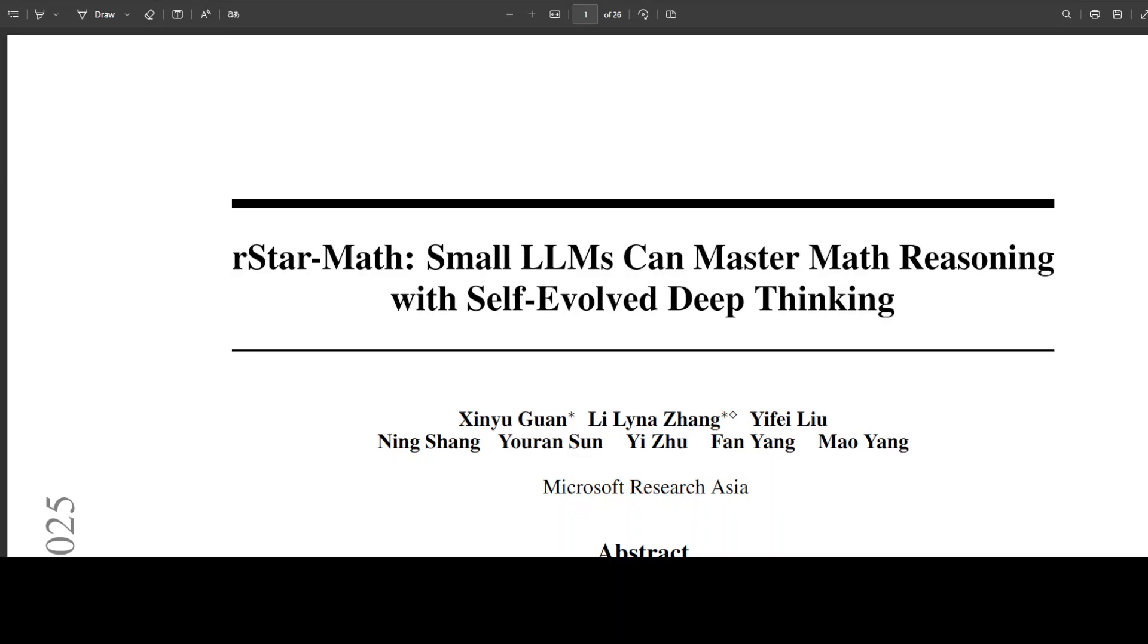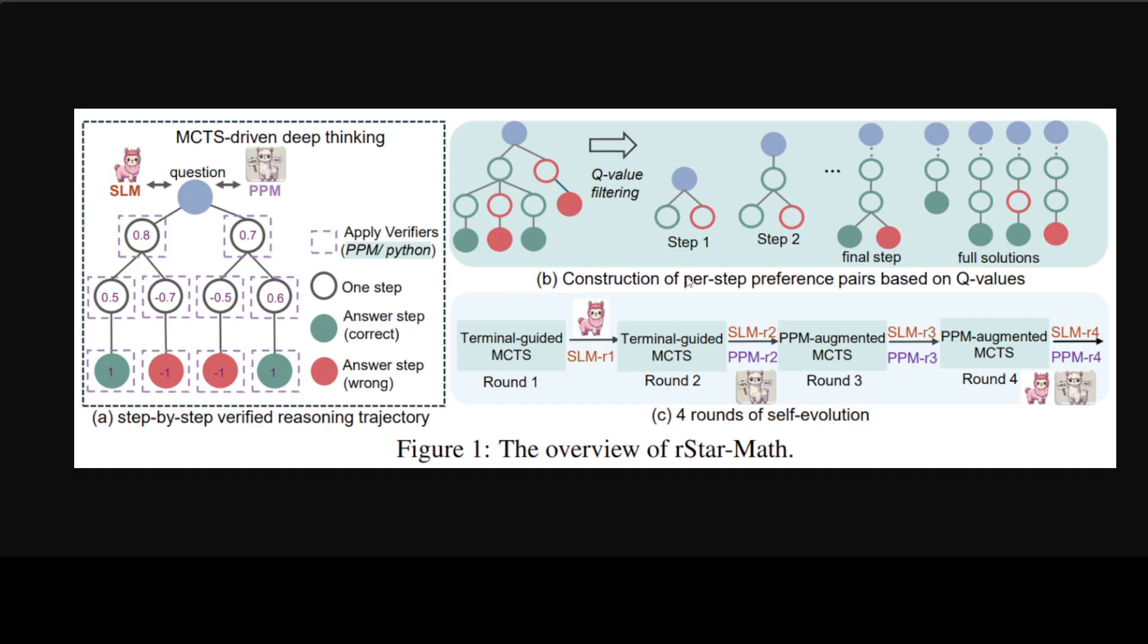So what has happened is that Microsoft has come up with this new model which has been designed to solve mathematical problems. This research seems quite unique because it uses a combination of two smaller language models or SLMs and a technique called Monte Carlo Tree Search or MCTS.